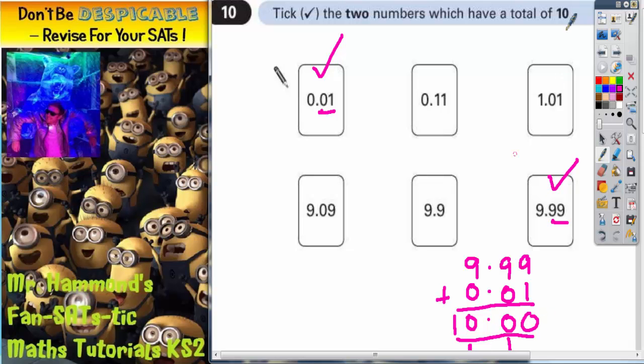10.00 is 10. These two things are the same thing. So we've found it. So those two numbers that we've ticked do indeed have a total of 10. Always check with a column method.